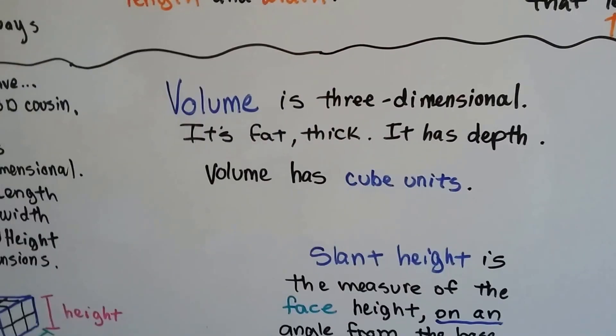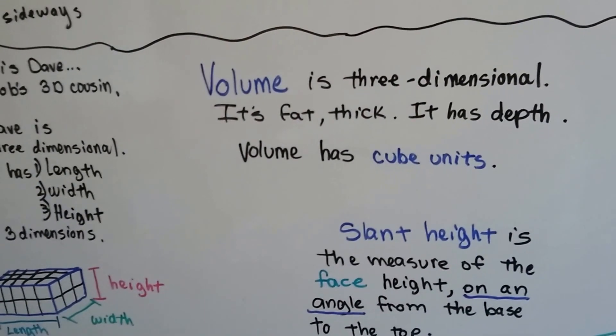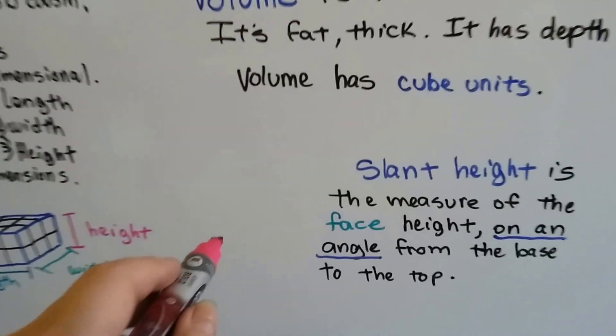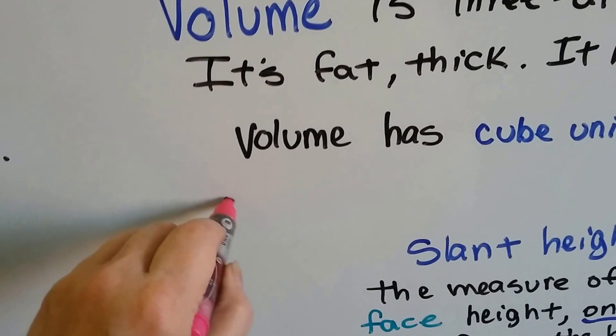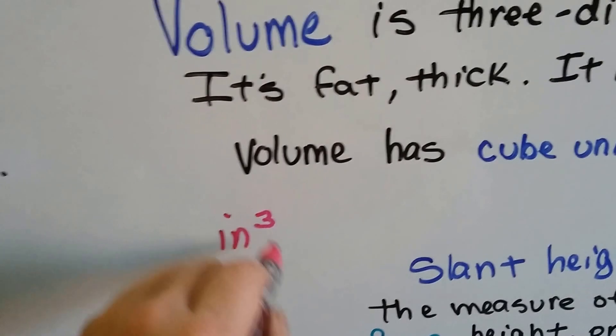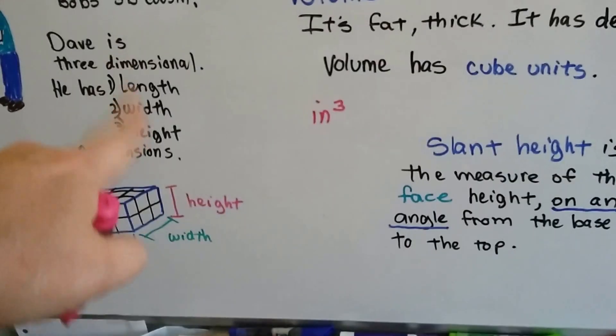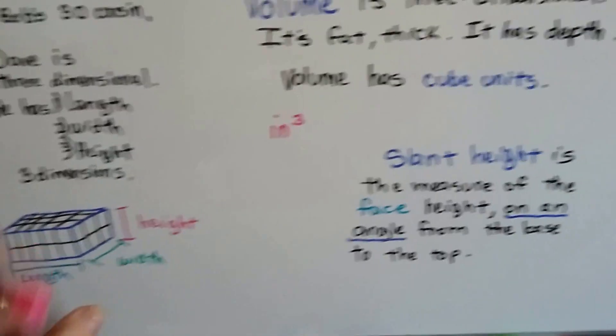So that's volume. Volume is three-dimensional. It's fat. It's thick. It has depth. And volume has cube units. So when we measure it, we'll say inches with a little three for cubed. And that tells us that there's three dimensions and that it's fat and thick, like a cube.